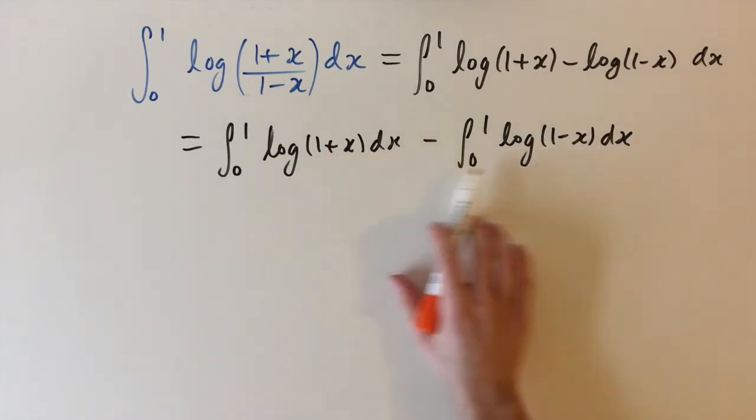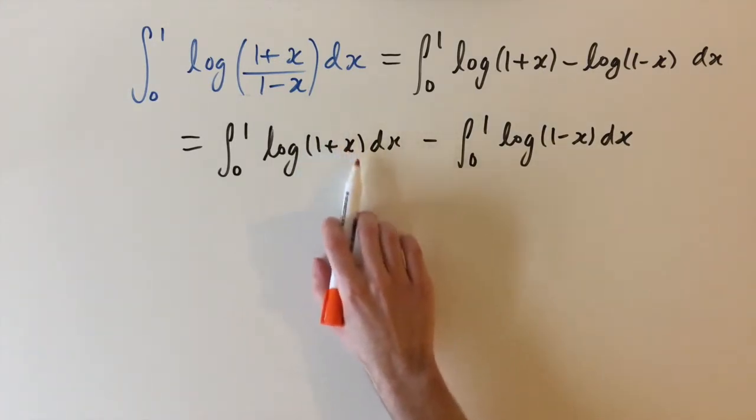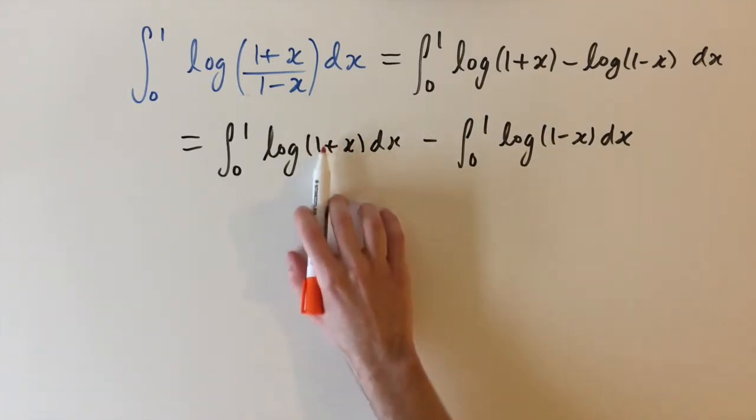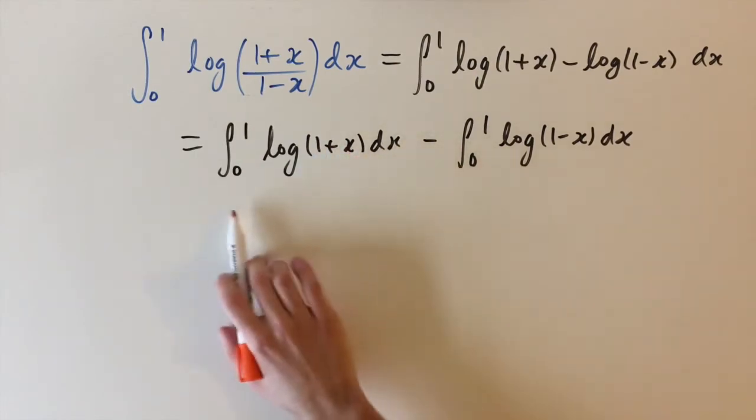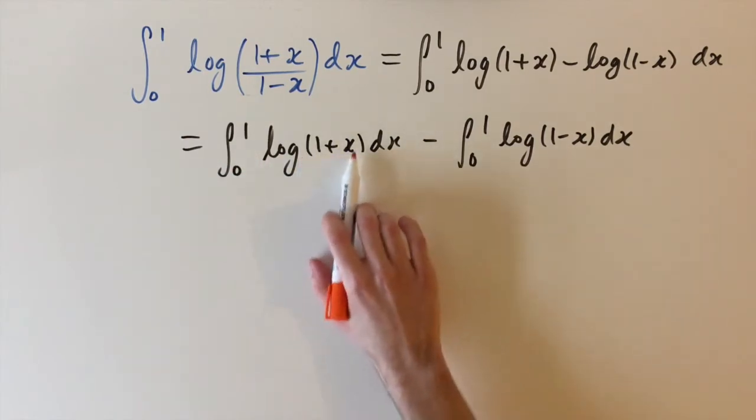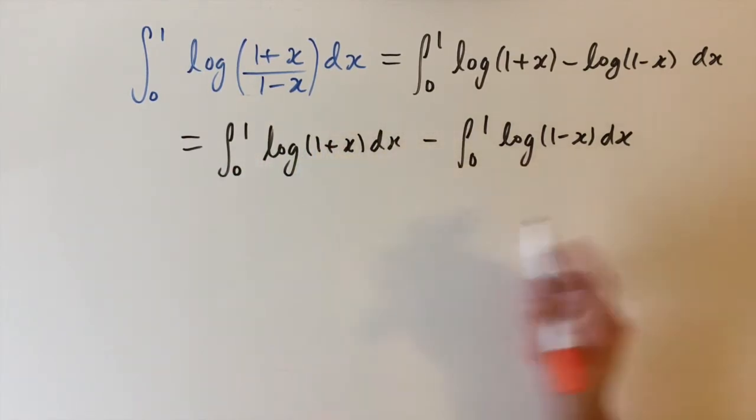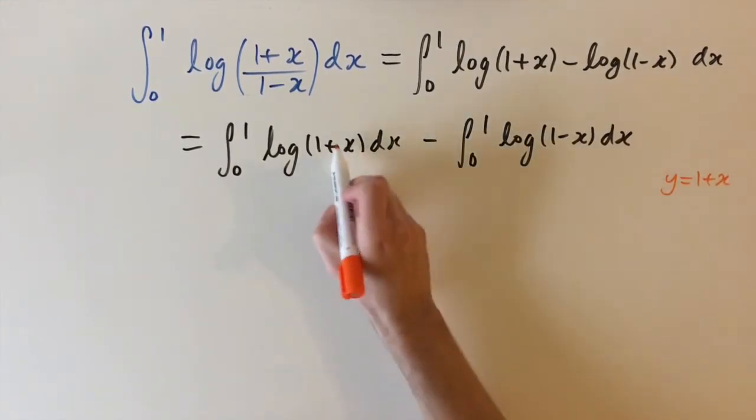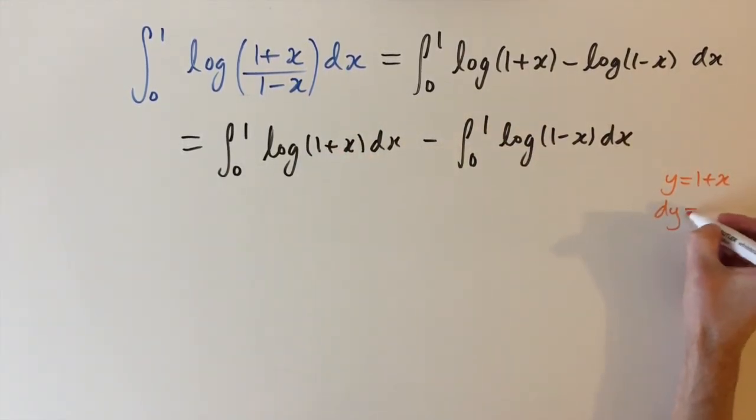So now we want to simplify these integrals slightly by instead of having a 1 plus x here we want to replace this by an x and the way we do this is we can shift the limits of the integral and to see which way the limits shift we can just do a very simple substitution. So I'm just going to let y equals 1 plus x this for the first integral then dy equals dx.